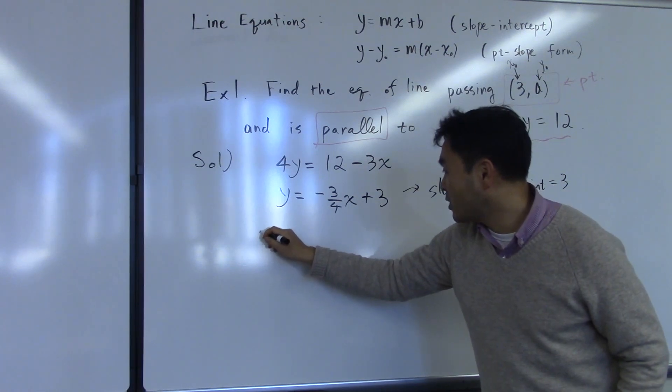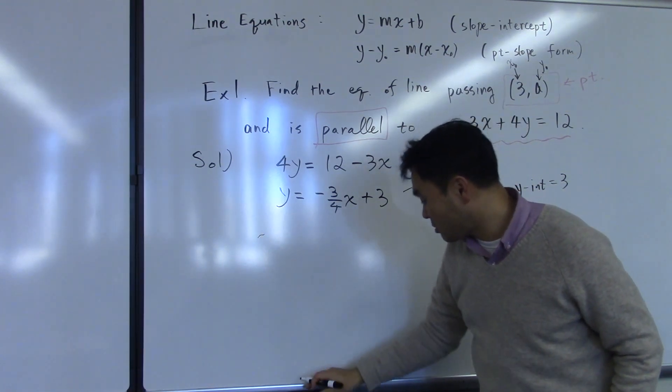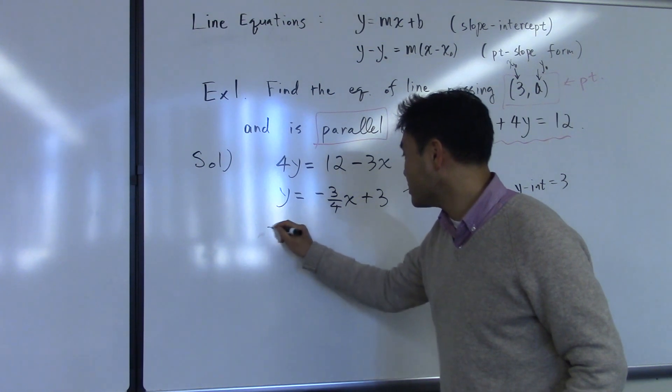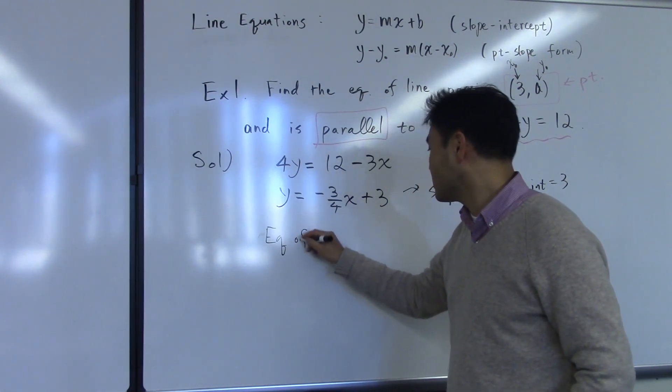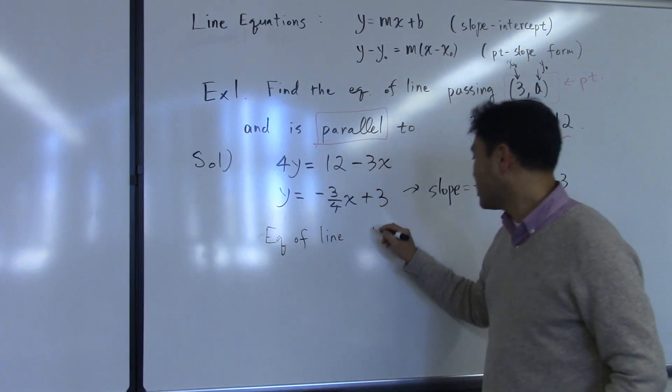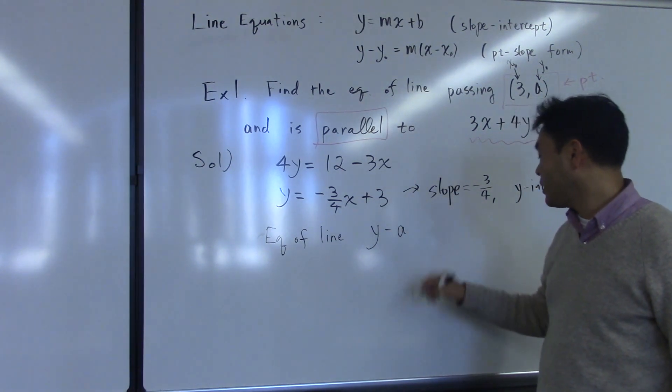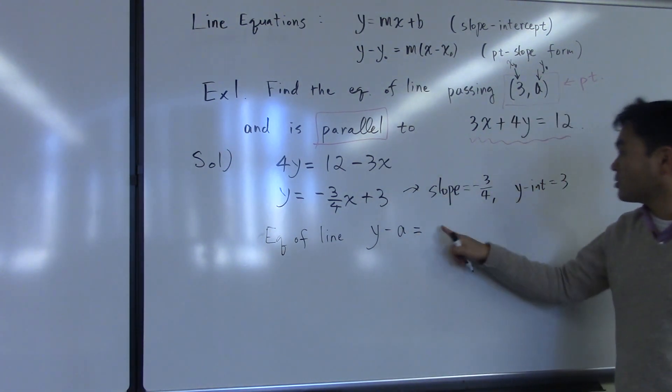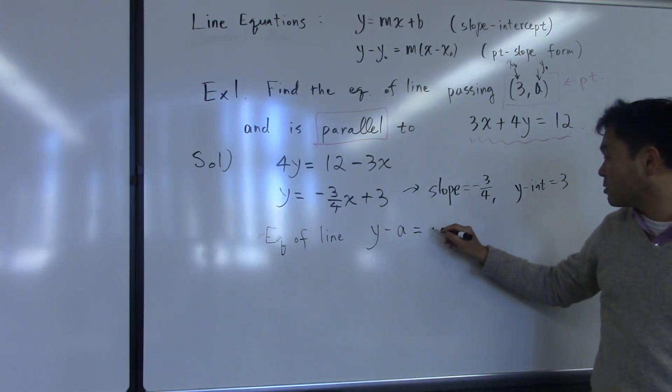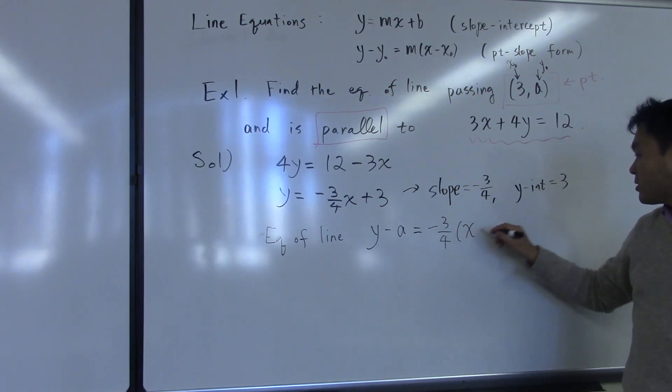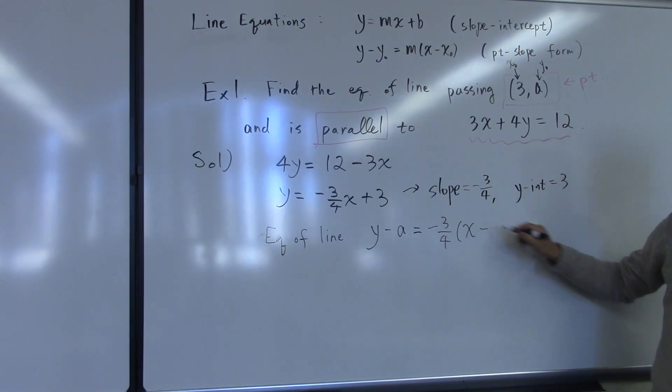Therefore, the equation of the line is y minus a equals, I have to put the slope. What's that? Negative 3 over 4. So we put negative 3 over 4 times x minus 3. So that's the answer.